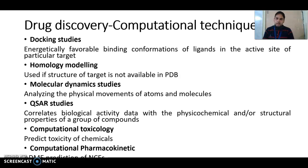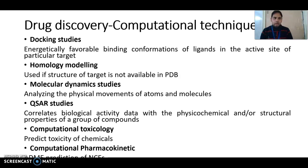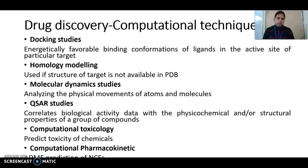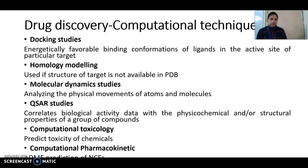Next is homology modeling. As the name indicates, it involves modeling a particular target when the structure of that target is not available in the protein database. In that case, we create a model that is homologous to that particular target. If the structure is already available, there is no need to perform homology modeling.